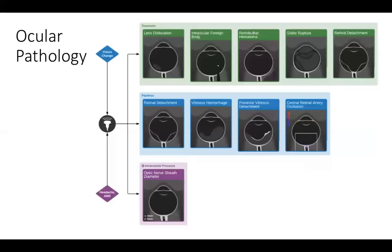Now let's go over ocular pathology. We're going to look for vision changes, traumatic loss of vision, and painless loss of vision. An additional indication is to evaluate for increased intracranial pressure.